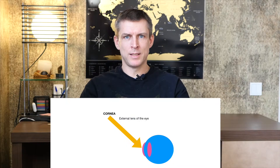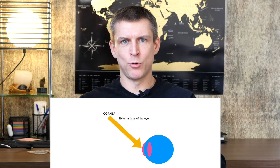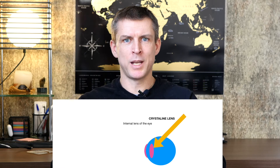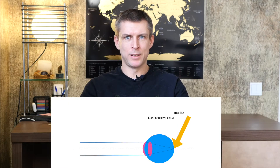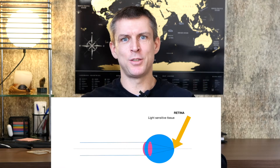Let's start with monofocal IOL. You have to know that our eye is an optical system which contains two special lenses. The first lens is our cornea, located in the front of the eye. The second lens, probably more important than the cornea, is the crystalline lens, located inside the eye, which helps to focus sharp images on the retina. The retina is the light-sensitive tissue of the eye, which allows you to see images like a sensor in a digital camera.